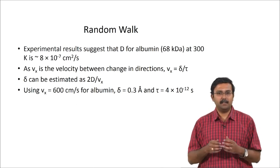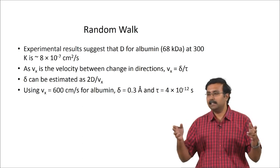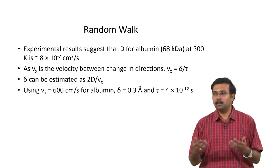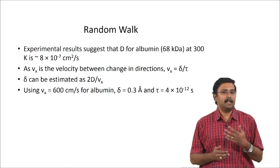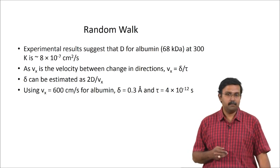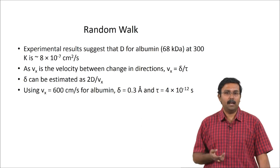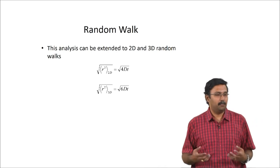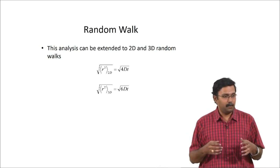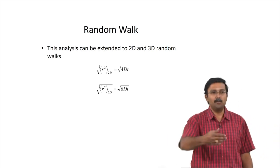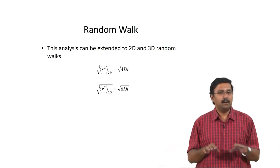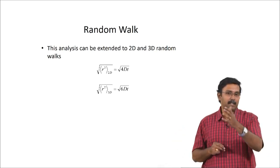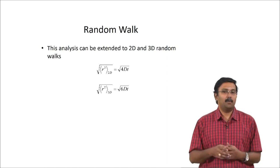The velocity during persistence time is delta divided by tau. Delta can be estimated as 2D divided by v_x — using v_x of 600 cm/s for albumin, delta is 0.3 Å and tau is 10⁻¹² seconds. What we looked at was a one-dimensional random walk — moving only left or right. In a 2D random walk the root mean squared displacement equation becomes √(4Dt), and a 3D random walk gives √(6Dt).